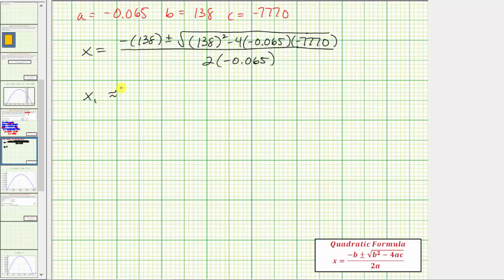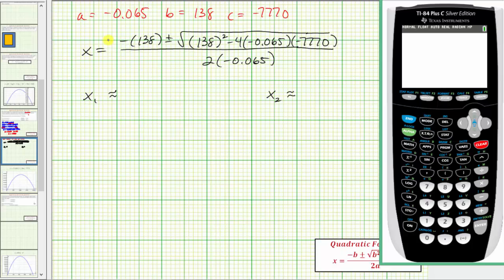Let's let the first solution be x sub one and the second solution be x sub two. We want the entire numerator in a set of parentheses, so we'll have open parenthesis for the numerator, and then negative 138. Let's first use the plus sign. So plus square root, and then we have square root of 138 squared minus four times negative 0.065 times negative 7,770. Right arrow to get outside of the square root. Close parenthesis for the numerator, and then divide it by. We also want the denominator in a set of parentheses. So open parenthesis, two times negative 0.065, close parenthesis, and close parenthesis, and enter.